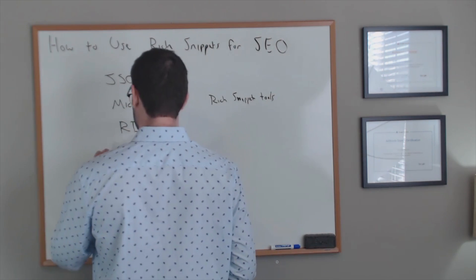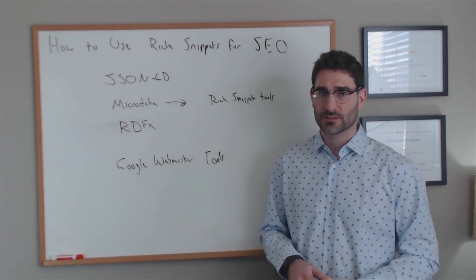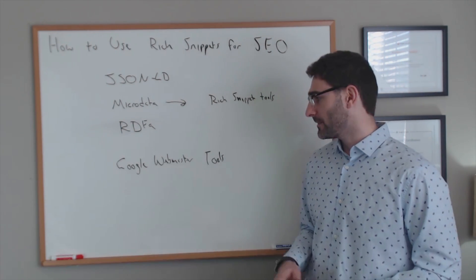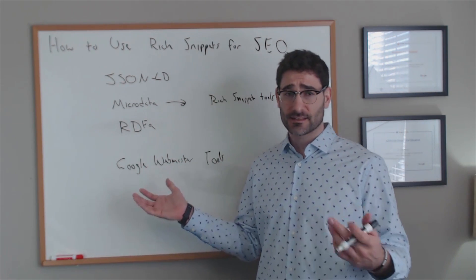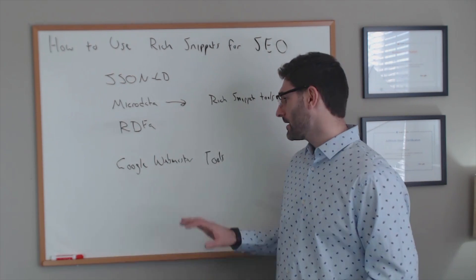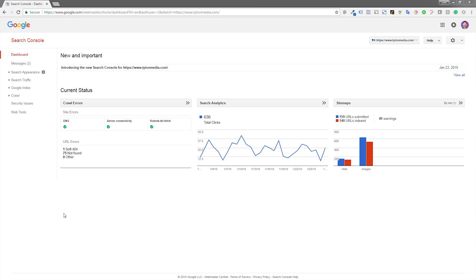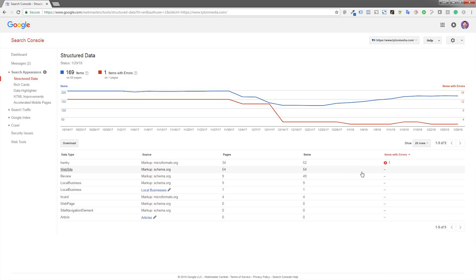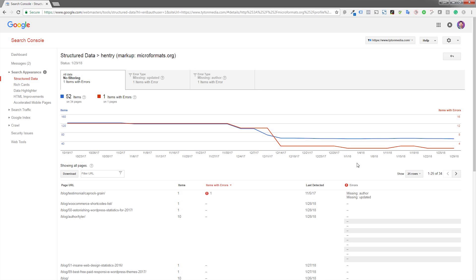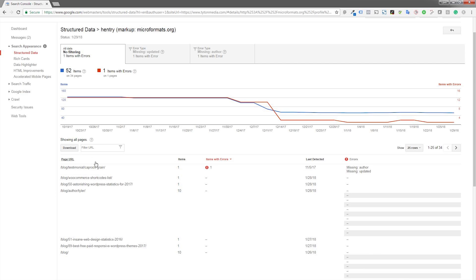Now that you have this rich snippet installed on your website, you can test it using Google Webmaster Tools. If you don't have Google Webmaster Tools set up, you should do that right now — I have a couple of videos on how to set it up and I'll post those below. Once you're in Google Webmaster Tools, go to the structured data tab on the left and you can view all of your structured data installed on your website and see any errors. If there are errors or missing data points, you can add those in and make sure everything is good.